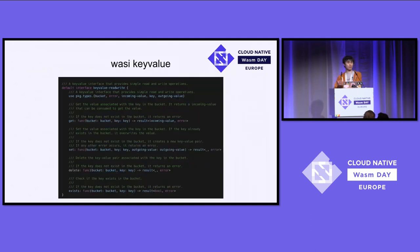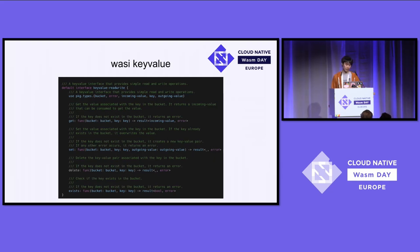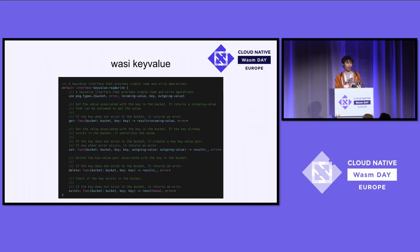We get a get function that returns a key-value pair, a set function to set your key-value pair, a delete function, and a check for whether a key exists. Any application targeting this interface doesn't have to understand what underlying infrastructure provides its key-value capability. That application is ideally extremely portable across different platforms that provide different key-value implementations.